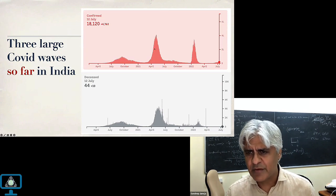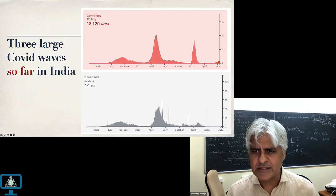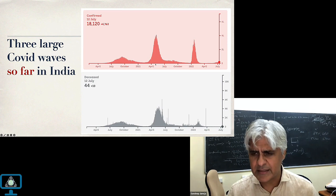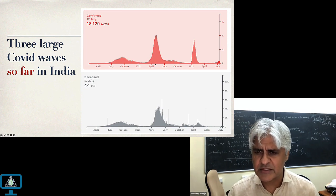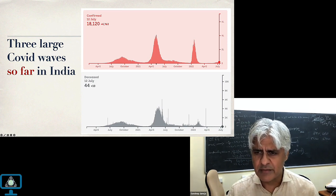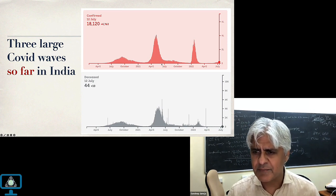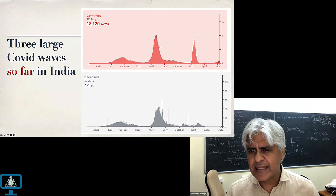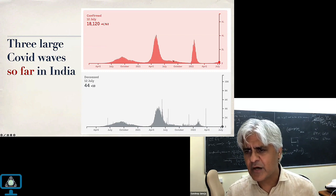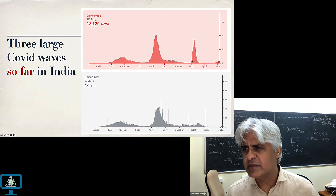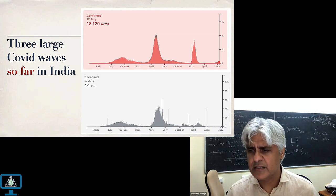The delta wave was enormously scary for all of India. It happened first in Mumbai, then after a few months went to the rest of India more or less in a synchronized manner. Then things calmed down, and we saw the Omicron wave in roughly December-January.